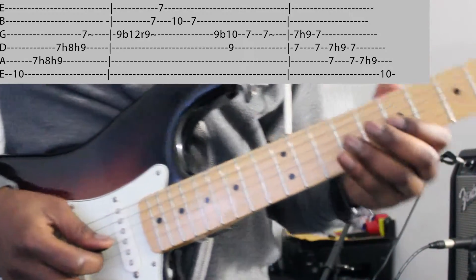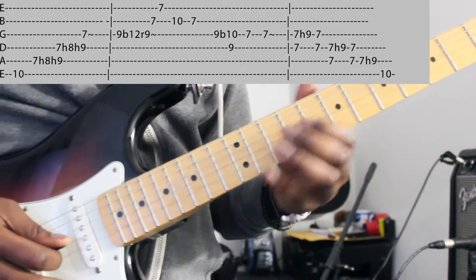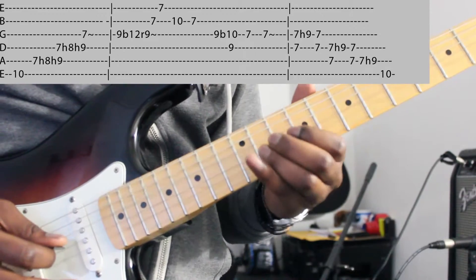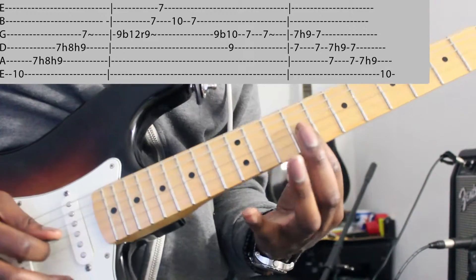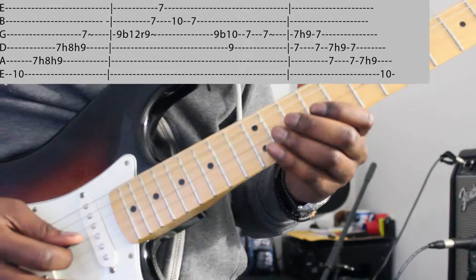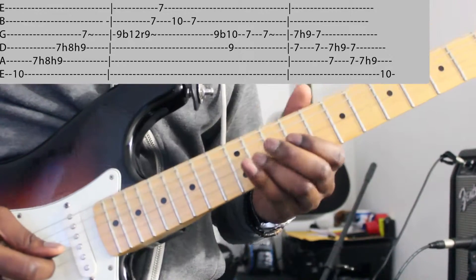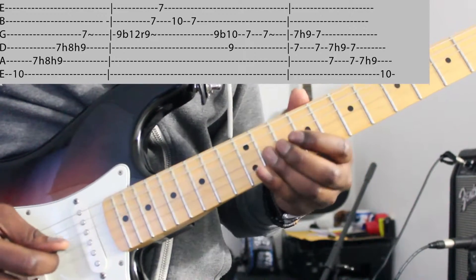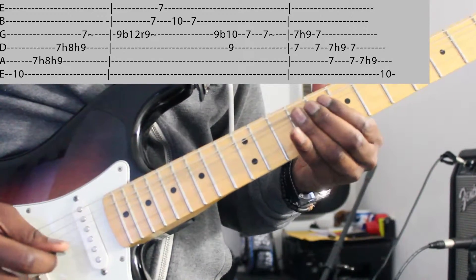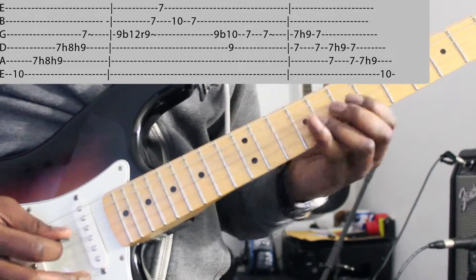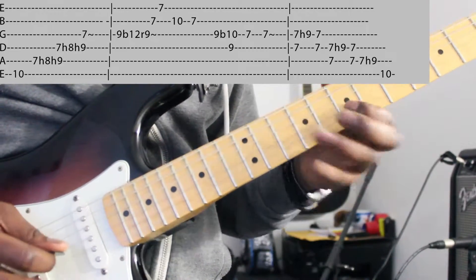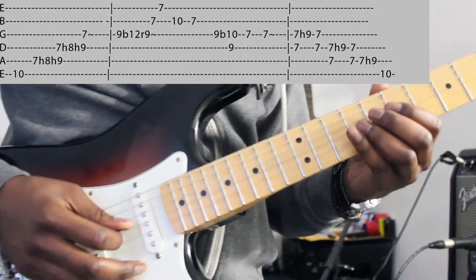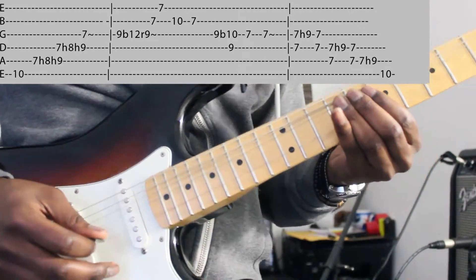Second part. In fact, we do a bend at fret 9, a full bend. We are there and we must reach this fret here. So we are at fret 9, and the goal when we do a bend is to reach the fret here, which is fret 11. So bend at fret 9 of the G string, full bend.